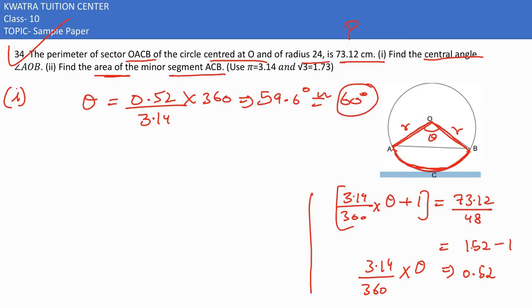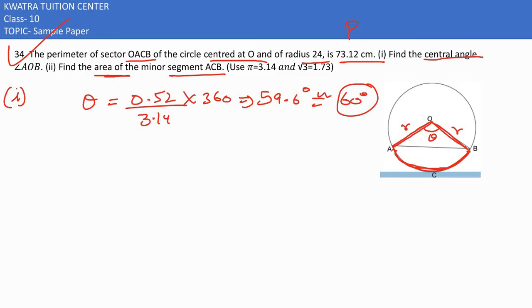As we need to find area of minor segment, the area of minor segment is area of sector minus area of triangle AOB.